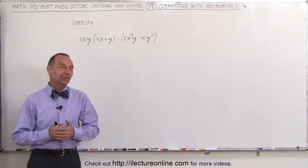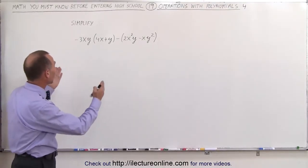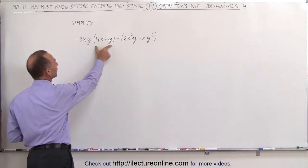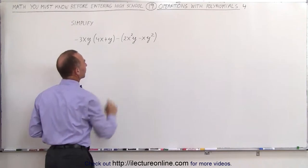Welcome to Electurn Line. Here's our next video where we have to simplify this expression. Again, we'll have to multiply this times the binomial here and then subtract from that this binomial there.